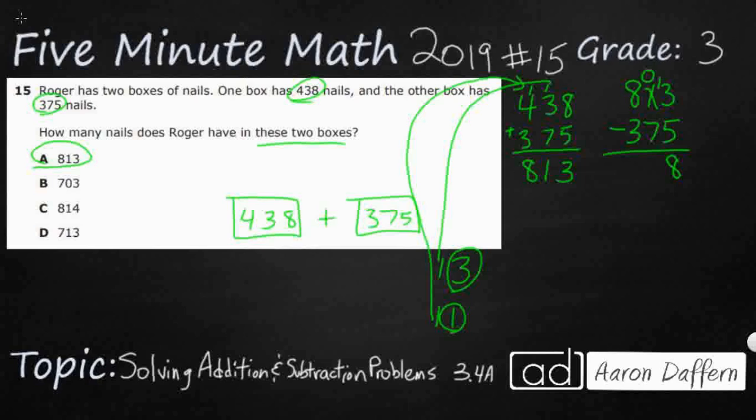0 minus 7. I know we're tempted to write 7, but we can't do that. There's nothing there. So we need to regroup 100, leaving 7 behind. Break that 100 into 10 10s. Now I've got 10 minus 7, that is 3. And then 7 minus 3 is going to be 4. 438. So this matches this. So that is my good answer. That is the answer I'm going to keep.